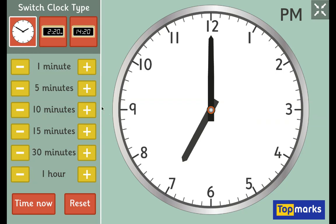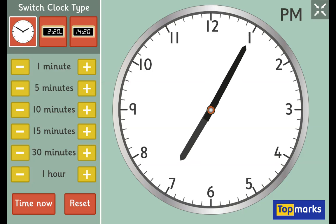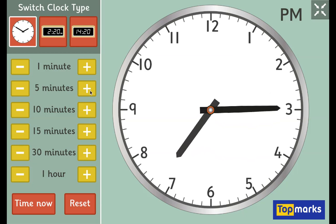If we move our minute hand to the 1, then that is 5 past 7. So we're still in 7 o'clock, but we've gone 5 minutes past the 7th hour. So each number, remember, is worth 5 minutes.